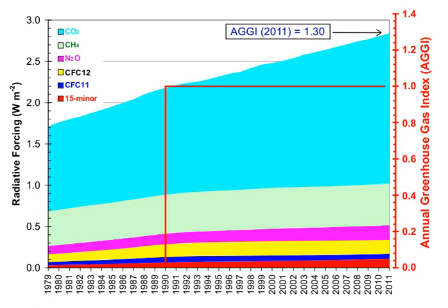Human activities since the beginning of the Industrial Revolution around 1750 have produced a 45% increase in the atmospheric concentration of carbon dioxide (CO2), from 280 ppm in 1750 to 406 ppm in early 2017. This increase has occurred despite the uptake of more than half of the emissions by various natural sinks involved in the carbon cycle.